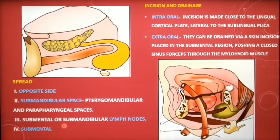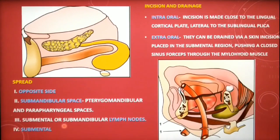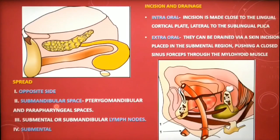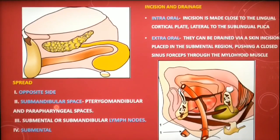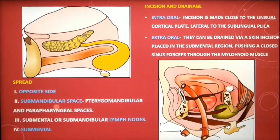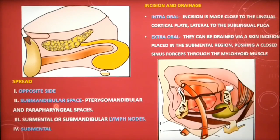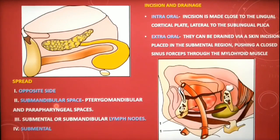Surgical drainage can be performed both intra- and extraorally. Intraorally, an incision is made close to the lingual cortical plate, lateral to the sublingual plica. Important structures to be protected are the lingual nerve, Wharton's duct, and the sublingual vessels. An extraoral approach is preferred when both submental and sublingual spaces contain pus. When the submandibular space is also involved, the sublingual space can be drained through an incision in the skin overlying the submandibular space.